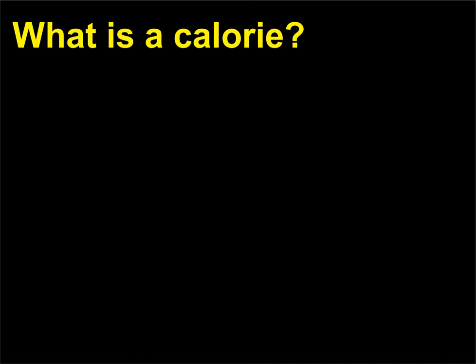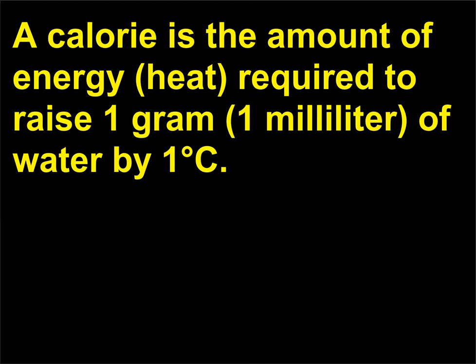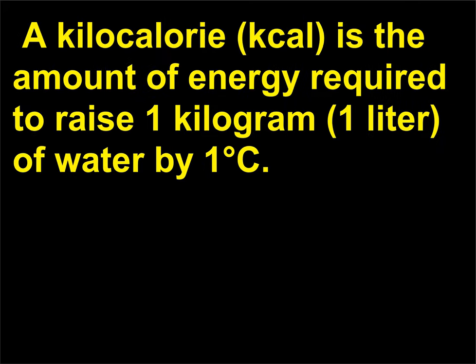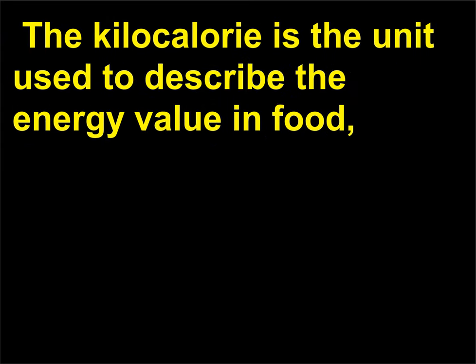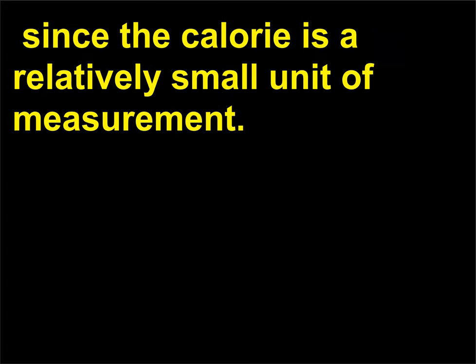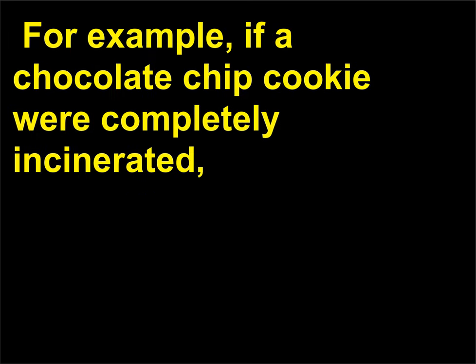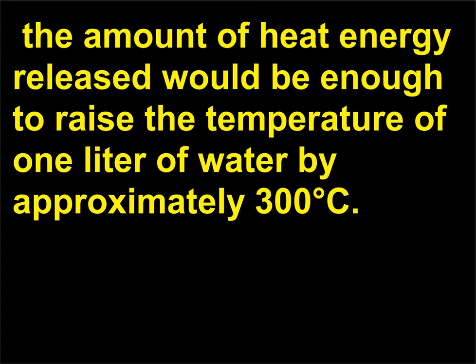What is a calorie? A calorie is the amount of energy (heat) required to raise 1 gram (1 milliliter) of water by 1 degree Celsius. A kilocalorie (kcal) is the amount of energy required to raise 1 kilogram (1 liter) of water by 1 degree Celsius. The kilocalorie is the unit used to describe the energy value in food, since the calorie is a relatively small unit of measurement. For example, if a chocolate chip cookie were completely incinerated, the amount of heat energy released would be enough to raise the temperature of 1 liter of water by approximately 300 degrees Celsius.